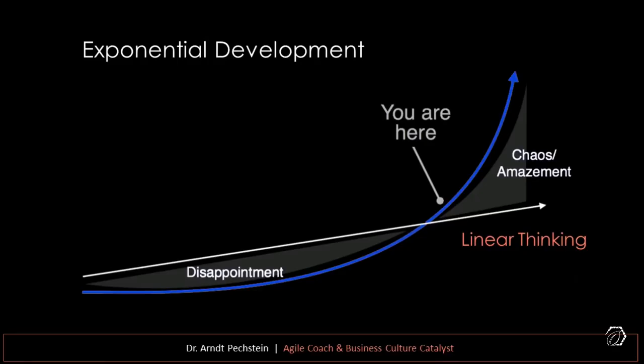All these things are developing on an exponential scale, which is something we can hardly anticipate. We are not hardwired to think exponentially — we think in linear terms. What we see in this graph along the white line is how our mind works, how we can perceive and anticipate the future. When we make predictions of how the world will be in the near future, we base our hypotheses and assumptions on what we have experienced in the past.